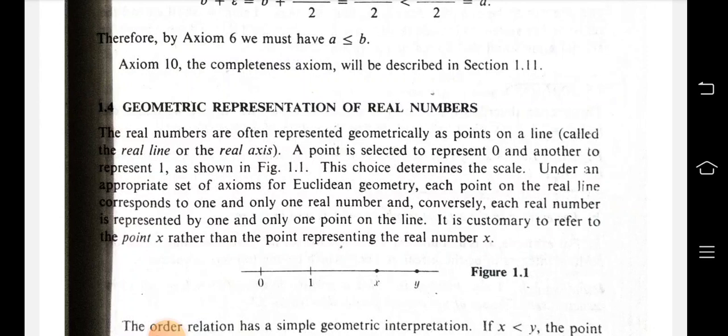This choice determines the scale. Under an appropriate set of axioms for Euclidean geometry, each point on the real line corresponds to one and only one real number, and conversely, each real number is represented by one and only one point on the line.